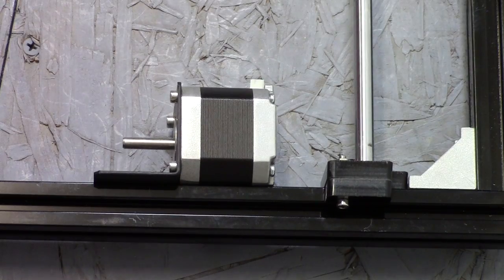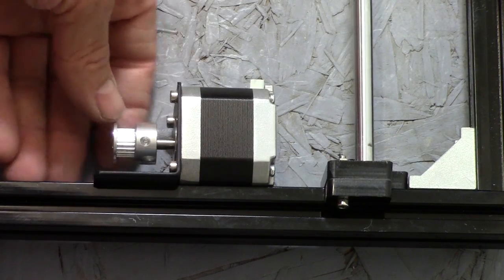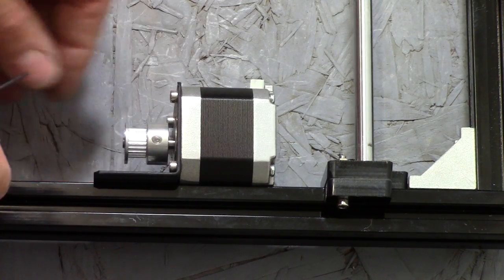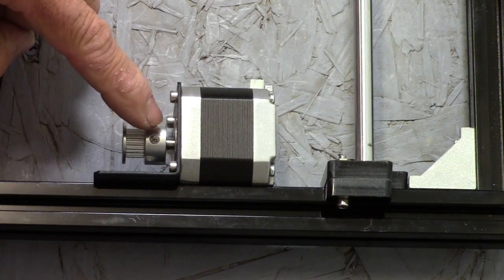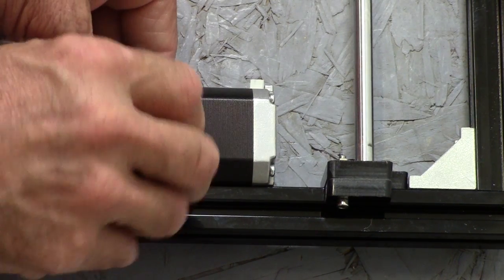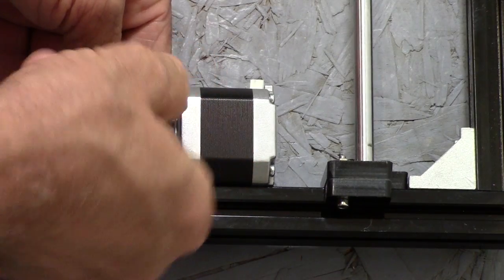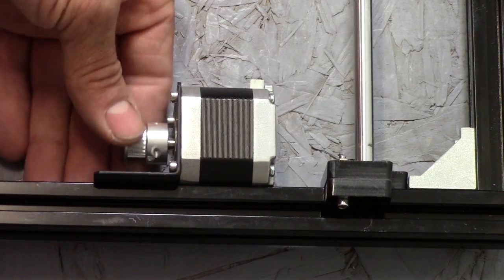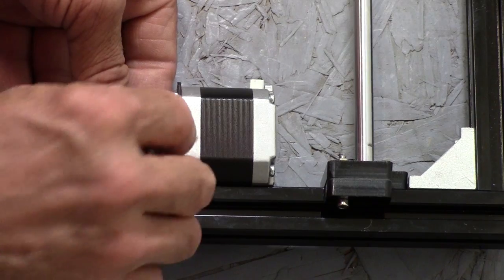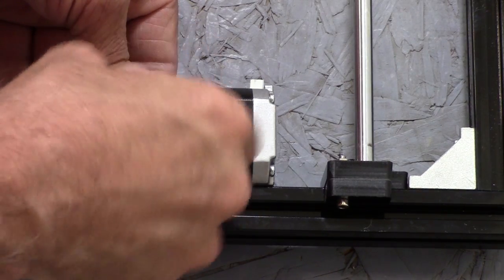Now we can mount up one of the pulleys here onto the motor. So slide that on. It says to leave about a 3 millimeter gap between the motor and the pulley. That looks good. T-L-A-R, that looks about right. We'll tighten both of those set screws down.